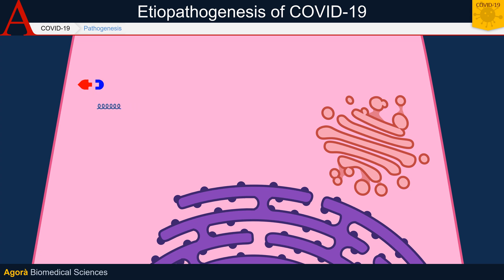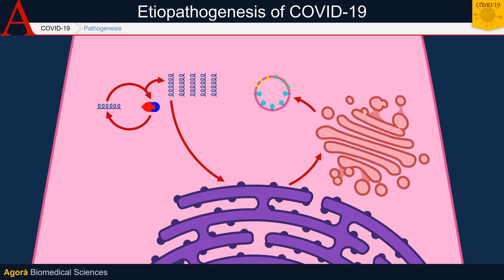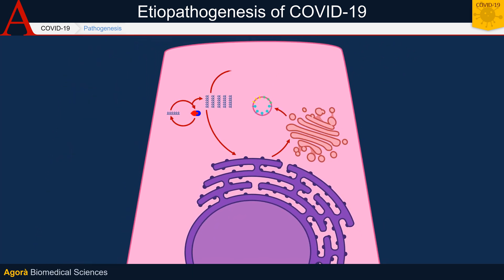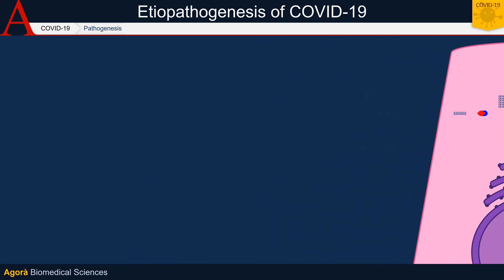Once in the cell, viral polyproteins are synthesized by the RNA to form the replication-transcriptase complex. At this point, the virus synthesizes the RNA through its RNA-dependent RNA polymerase, and structural proteins are formed through the RER and Golgi of the cell. This is followed by an assembly that, once completed, allows the new virions to exit the cell and spread the infection.